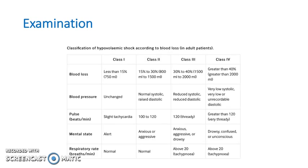Assess how much blood they're losing using vital signs: blood pressure, pulse, mental state, and respiratory rate. For example, if blood pressure is unchanged, they're slightly tachycardic, alert, and respiratory rate is normal, they're losing less than 15% — under 750 ml. However, if blood pressure is very low, pulse is greater than 120, they're drowsy or unconscious, and respiratory rate is above 20, they could be losing more than 40% — over 2000 ml — classified as class 4.